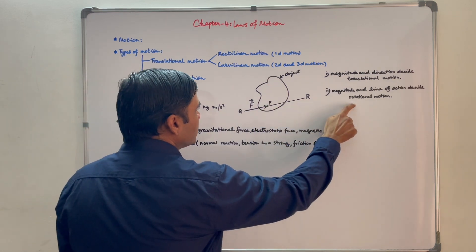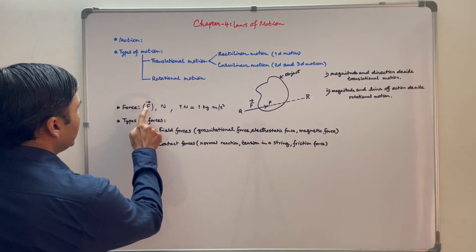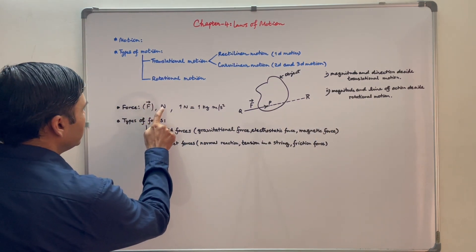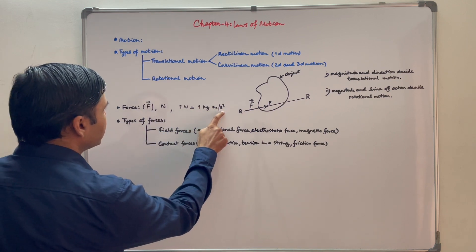We will talk more about rotational motion in respective chapter. Force is represented by capital F. Its unit is Newton. One Newton is equal to one kg meter per second square.